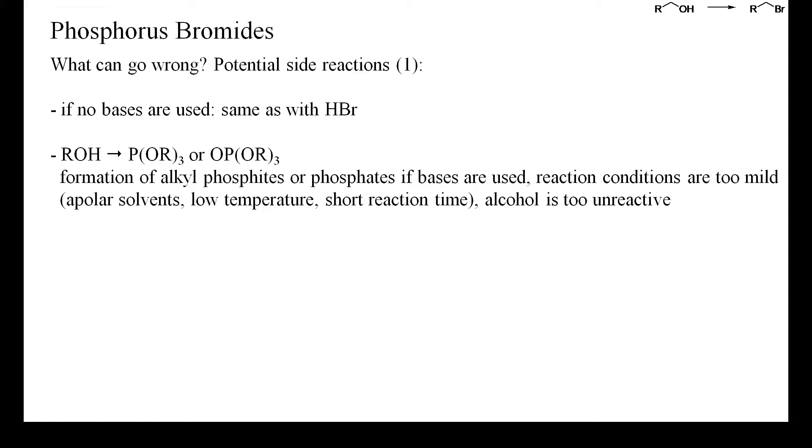These are rather stable and usually do not react with bromide. As with most other deoxyhalogenating reagents, also phosphorus bromides can cause allylic or propargylic rearrangements.